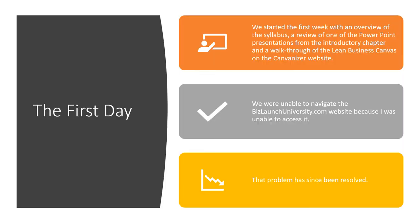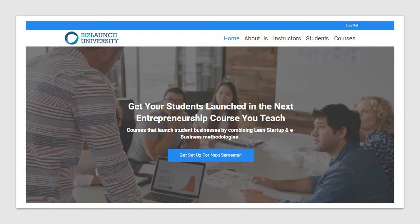Let's talk about highlights from week one. We started off with an overview of the syllabus, a review of a PowerPoint from the introductory chapter, and a walkthrough of the lean business canvas on the Canvanizer website. I sent you a sample of that work for demonstration purposes. Unfortunately we weren't able to navigate bizlaunchuniversity.com last time, but those problems have now been resolved.